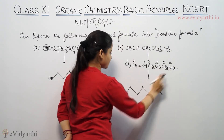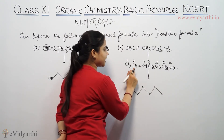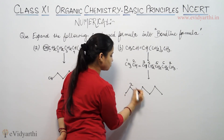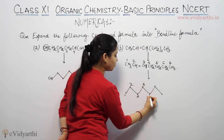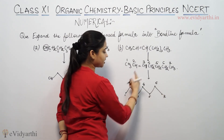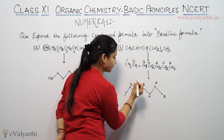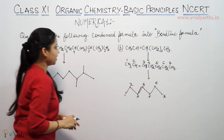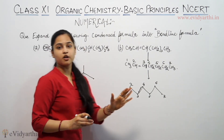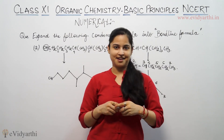Carbons 1 through 7 are counted. The second and third carbon have a double bond. So this is the conversion of the condensed formula into the bond-line formula. This brings me to the end of this session. We will be back soon with another question. Goodbye, take care.